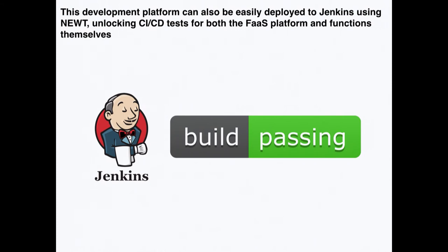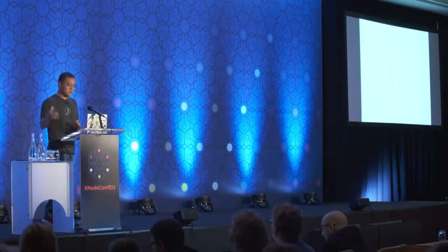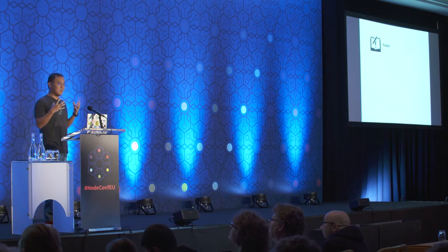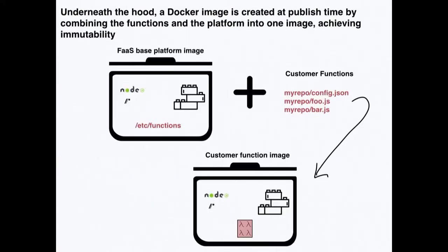This development platform can also be deployed to Jenkins, unlocking CI/CD aspects for teams — giving them a nice CI pipeline to improve quality and reduce bugs. Getting code to production involves publishing, deploying, and operating. With our platform, you literally just publish your functions: we create a versioned image of your function in a centralized registry, combining our base platform Docker image with your functions to create a new Docker image.